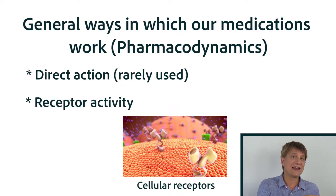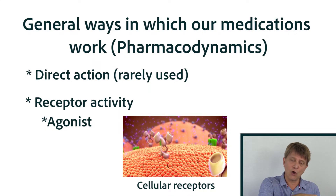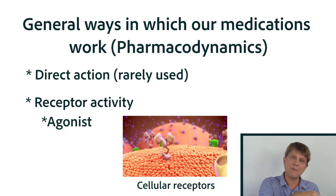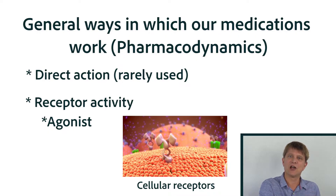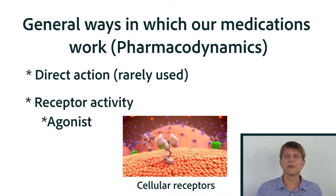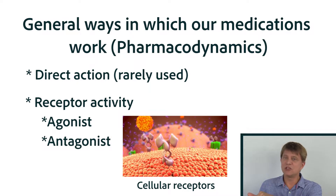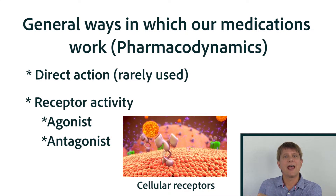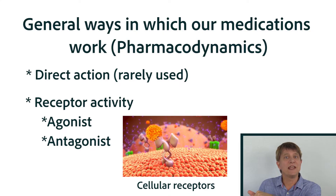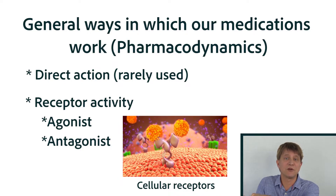The agonists, which would bind to the receptor and cause the same action as the endogenous compound. And we talked about the antagonists, which would bind to the receptor and basically not allow the endogenous substance — the natural substance — to bind to their own receptor.